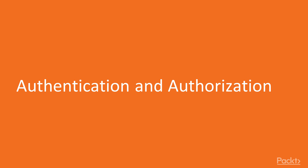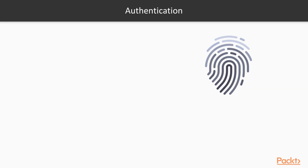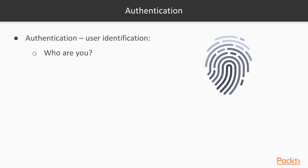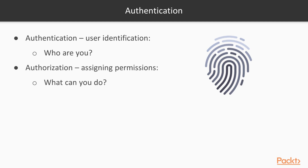Authentication and authorization are different things, which are usually done together. First, a user has to be identified or authenticated when he logs into the system. After he is proved to be a known user, he can get some permissions, or get authorized, to access the system operations.